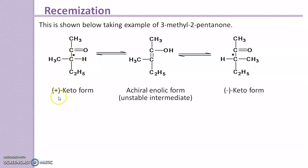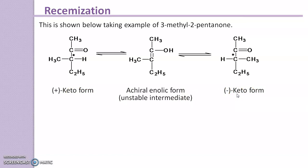Here is the diagrammatical representation, taking the example of 3-methylpentanone. Here is the ketone form, which produces the dextrorotatory isomer. It converts into the achiral enolic form, which is an unstable intermediate, and due to that instability it converts back into the ketone form, producing the levorotatory form. These dextro and levo isomers together form a racemic mixture.